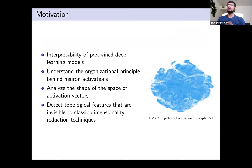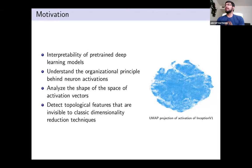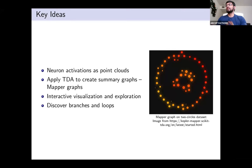The motivation comes from trying to figure out what the activation vectors of high-dimensional neural networks look like. On the right you can see a UMAP projection of activation vectors from Inception V1, a popular image classification network. There seems to be some structure, but it's not very clear — especially at lower levels where class separation is not evident. Dimensionality reduction alone does not lend itself to a good understanding of the activation vector space.